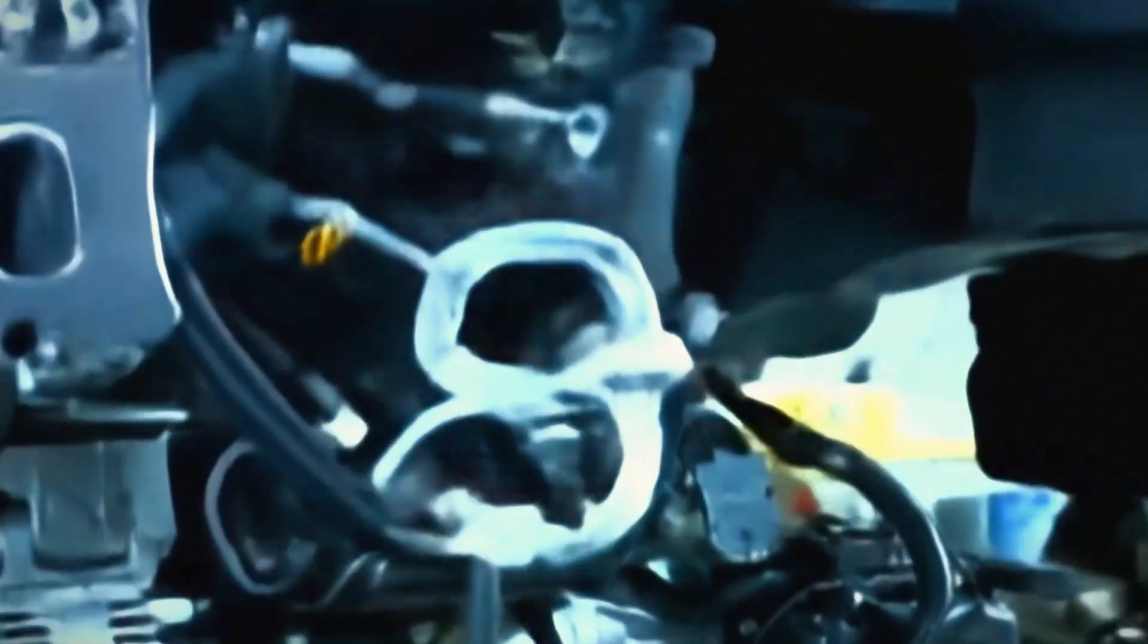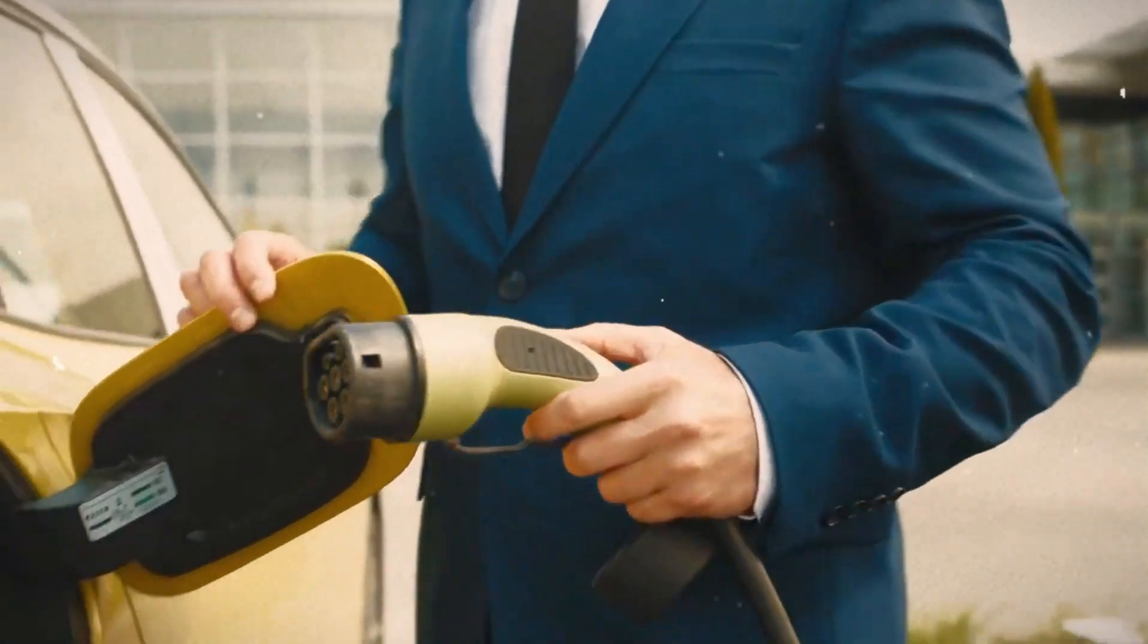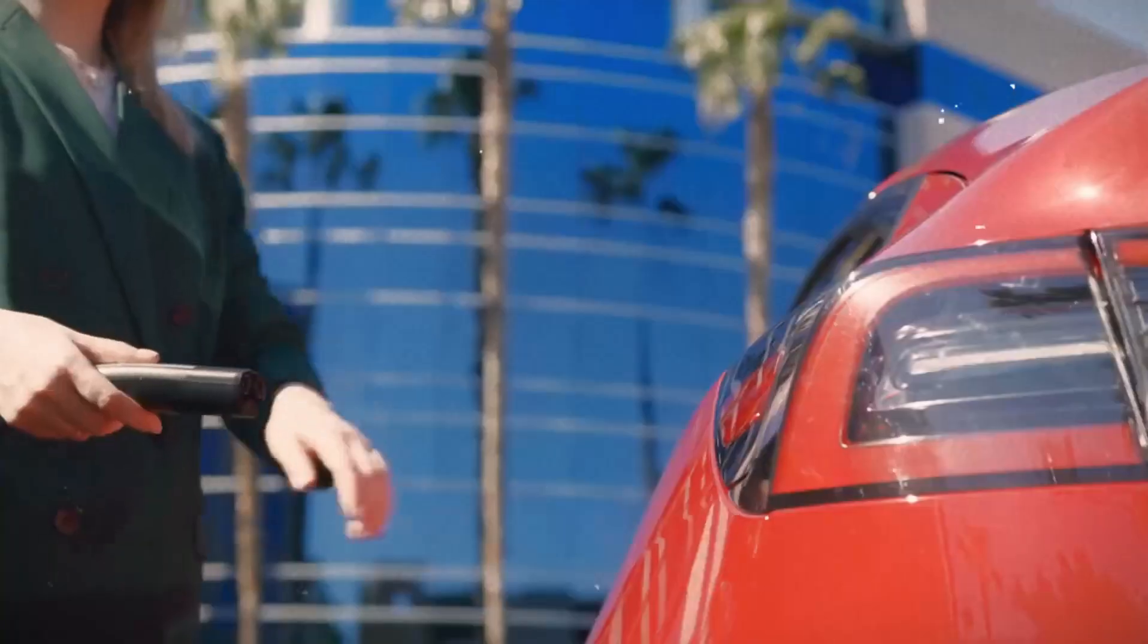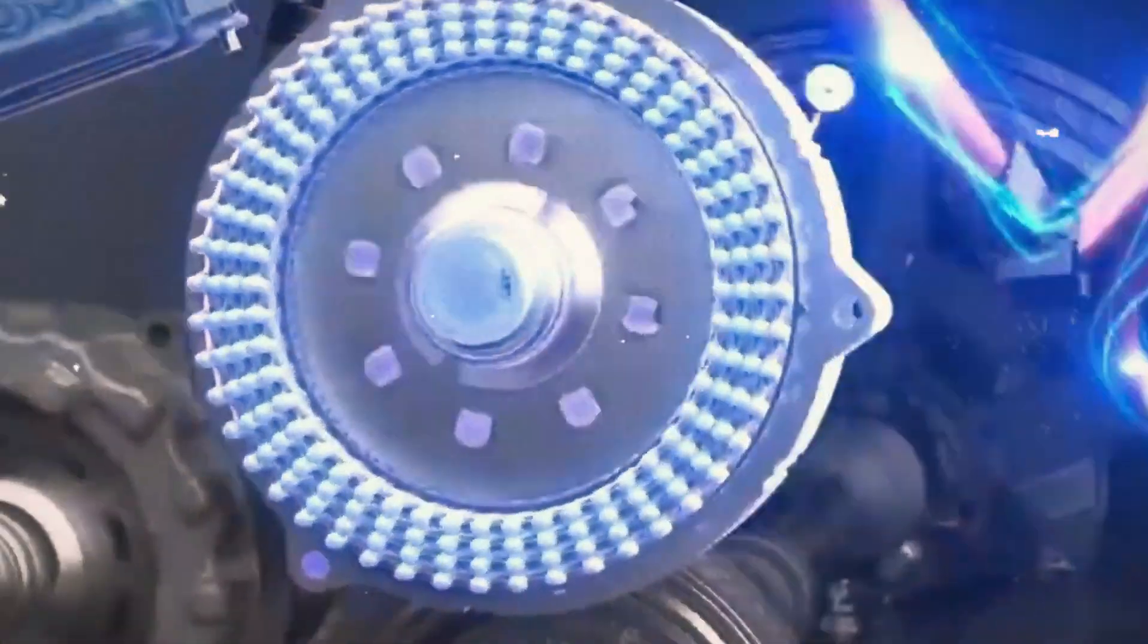Many companies promise electric roadsters and sports cars, yet they're not hitting the market. Could heavy batteries be the problem? Not entirely. One issue lies with the electric motors. Most EVs use radial flux machines, which are long and barrel-shaped, not ideal for sleek designs.